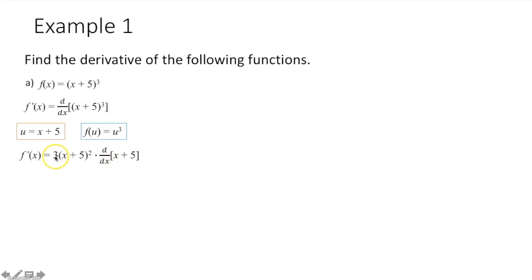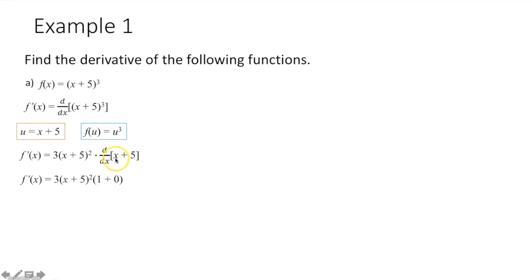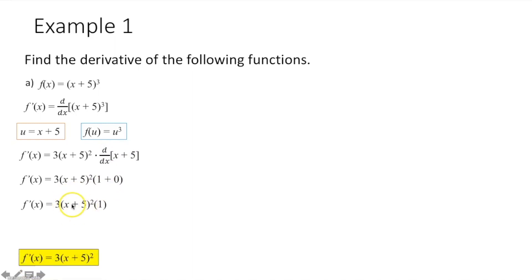The derivative of x plus 5 is just going to be 1 plus 0. Derivative of x is 1, derivative of 5 is 0, and this simplifies to 1. Multiply that by this, and you end up getting 3 times the quantity x plus 5 squared.